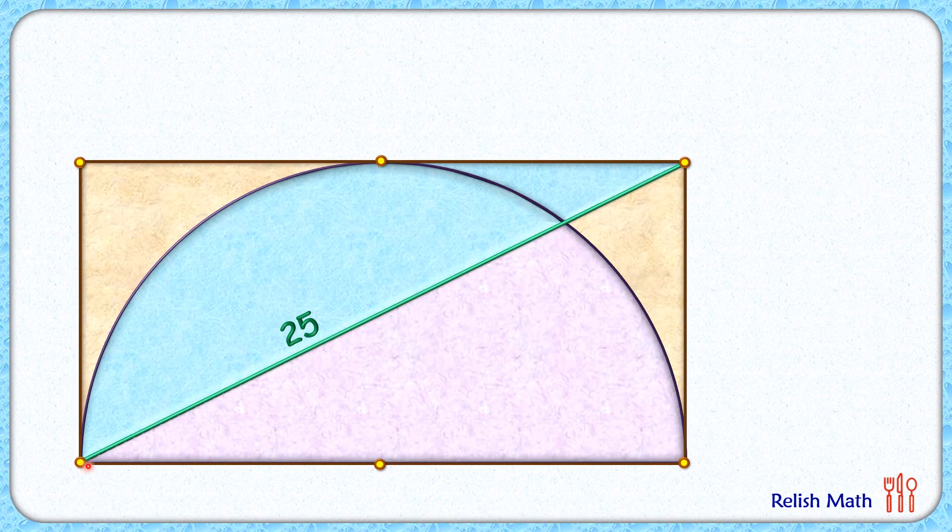Let's start by assuming the radius of semicircle as r cm. Thus the height of rectangle will be same as r cm, and the length of rectangle will be the diameter of semicircle, or 2r cm.